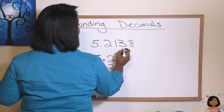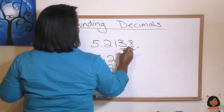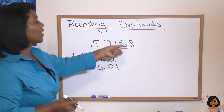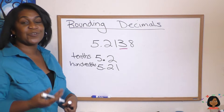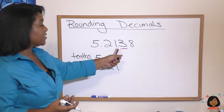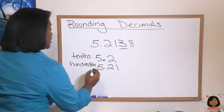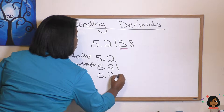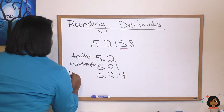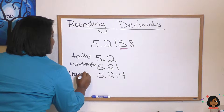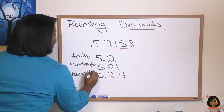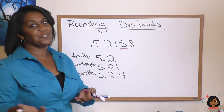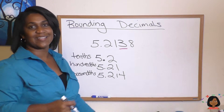Let's go ahead and round this to the thousandths place, which means we're going to highlight the 3. I'm going to look to the right and what do I see? I see an 8, which means we're going to round up. This number 3 goes to a 4, so it'll go to 5.214. That's our thousandths place. So the good news is if you remember how to round whole numbers, you also now know how to round decimals.